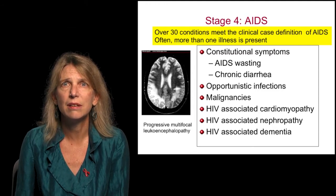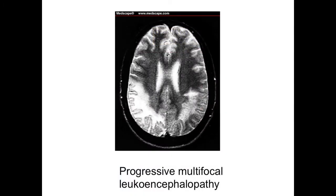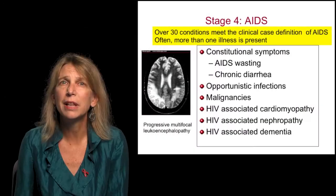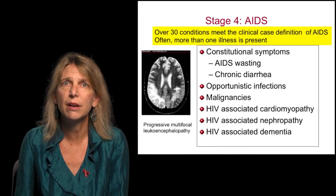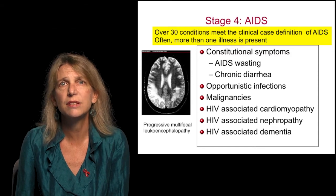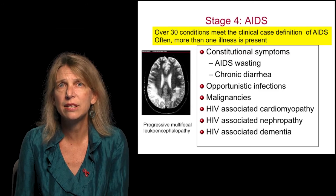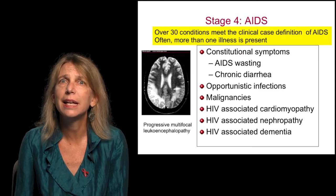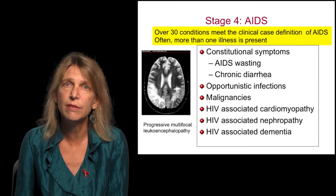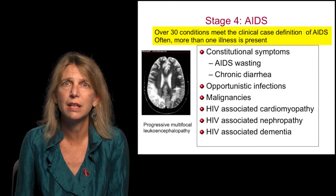There are many opportunistic infections that meet the case definition of AIDS. One of these includes progressive multifocal leukoencephalopathy, a central nervous system disease that affects the white matter, where patients present with neurologic focal findings. Malignancies are also included in AIDS-defining conditions, such as central nervous system lymphoma. AIDS conditions also include HIV-associated cardiomyopathy, HIV-associated nephropathy, and HIV-associated dementia.